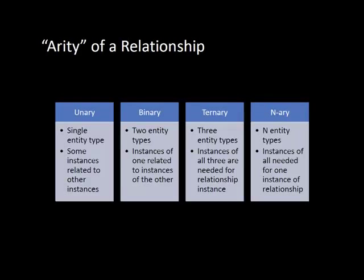In general, there's the term called arity of a relationship — unary, binary — so they call it the arity of a relationship. You could have a unary relationship in which there is only one entity type and some instances are connected to other instances, just like some employees were managers of other employees or some persons were children or mothers of other persons.